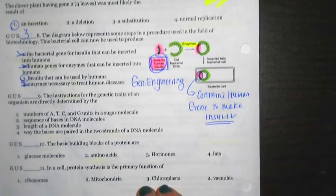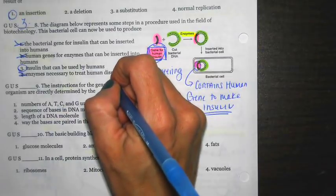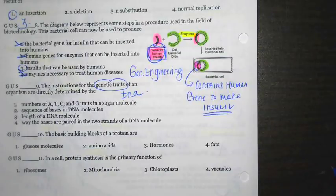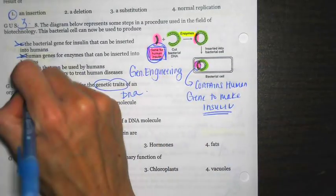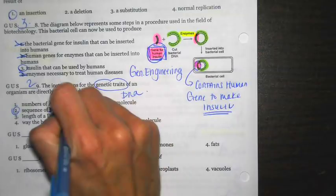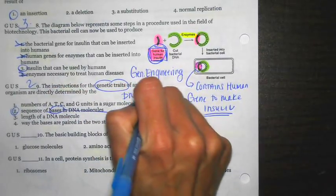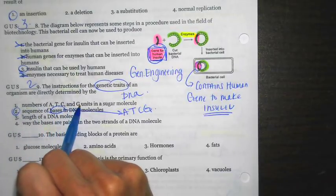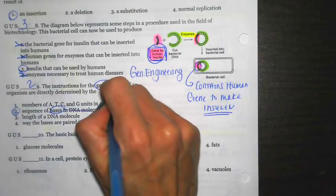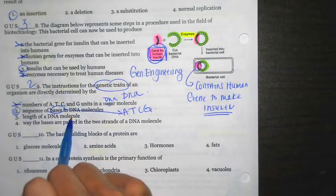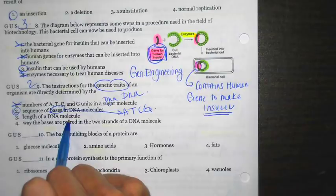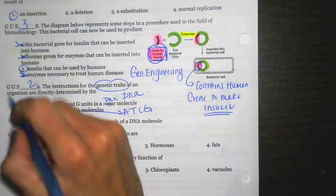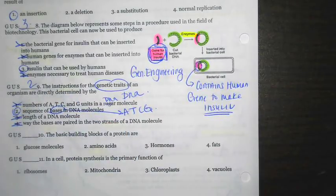The instructions for genetic traits of an organism are directly determined by. We're talking about genetic traits. We're talking about DNA. Correct answer choice here is going to be one. Sequence of bases. Sequence means order. Bases are talking about A, T, C, and G. They're trying to throw you off with number one because it says A, T, C, and G, but it says units in a sugar molecule. That should really be DNA molecule. Three says length of a DNA molecule. That doesn't determine your instructions. The way the bases are paired in two strands of the DNA. You know, they should have their complementary strands. Best answer choice there is going to be two.